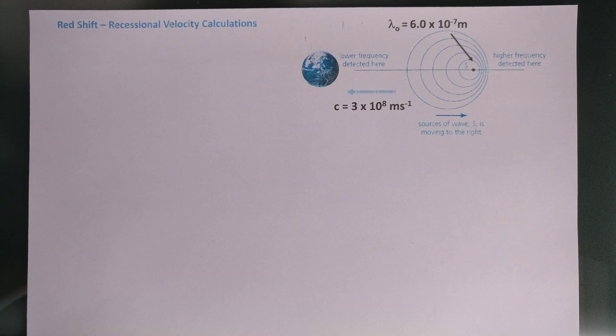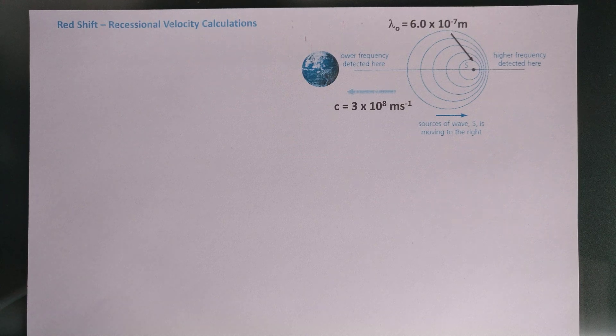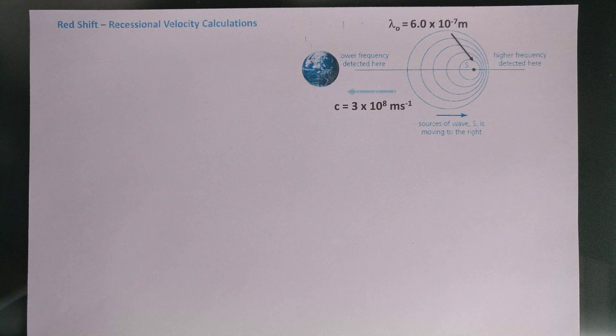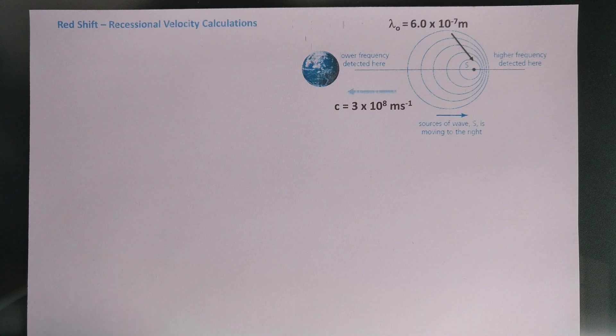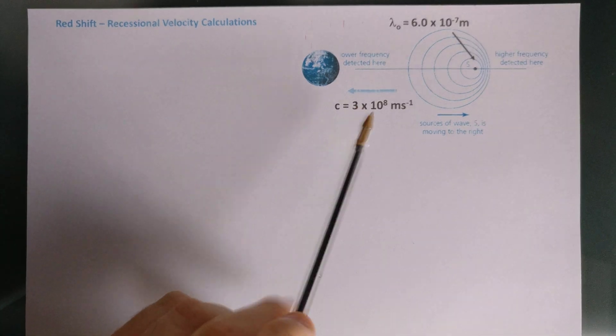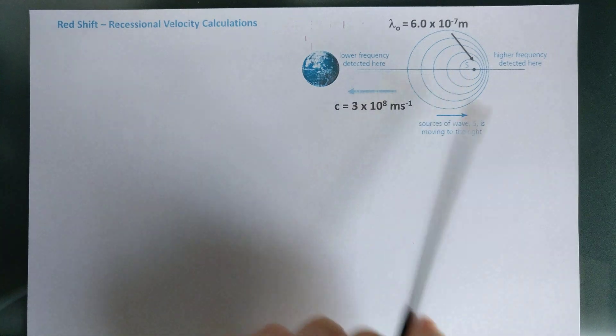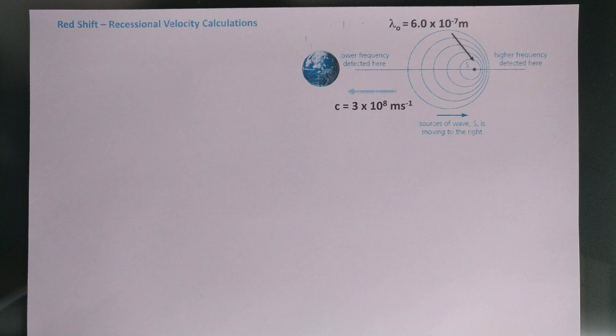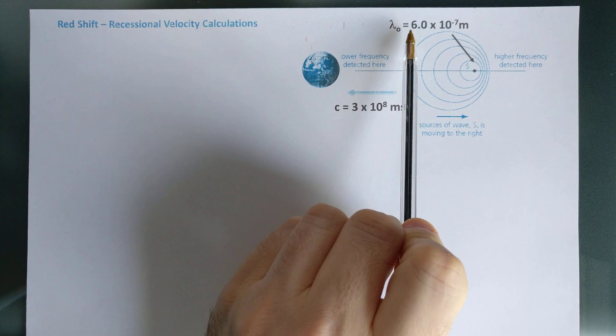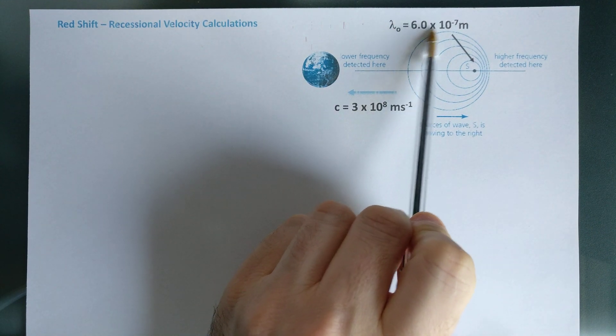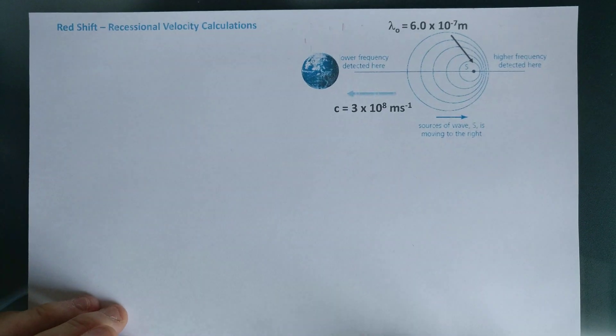Okay, it's Friday, definitely time for physics fun. Even though we're in lockdown, I'm doing a little video on redshift recessional velocity calculations, which comes into the IGCSE physics specification. So we've got a problem here where we have the Earth, and we have a source of light. It could be a galaxy or a star, but let's think galaxy.